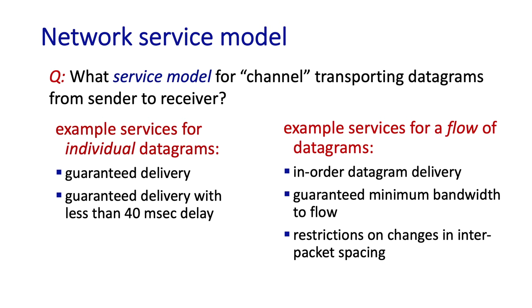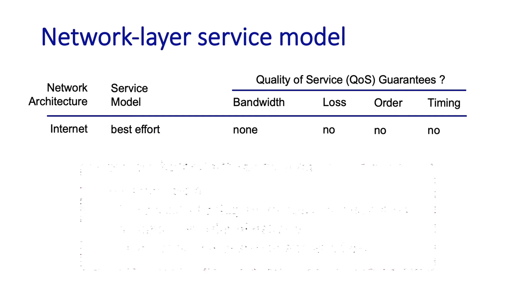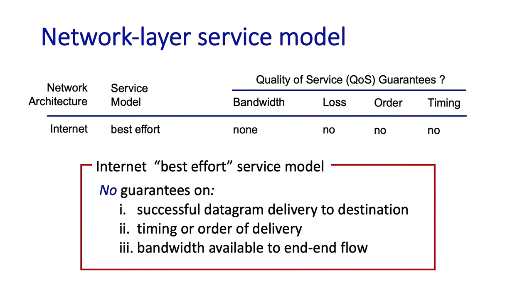There are ordering considerations — will packets be delivered to the transport layer in the order in which they're sent? And when we think about flows of packets, we might ask whether a flow might be guaranteed a minimum amount of bandwidth from source to destination. With all of these options, you might wonder: what is the internet's service model?